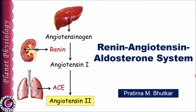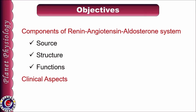As the name suggests, the system includes three components: Renin, Angiotensin, and Aldosterone. For each component, we shall study what is its source, structure, and functions. In the last, we shall study clinical applications related with the system.